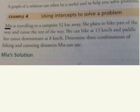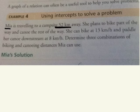So this girl, Mia, is traveling to a campsite that's 52 kilometers away altogether. She's planning to bike part of the way and canoe the other part of the way, but her speed is different.